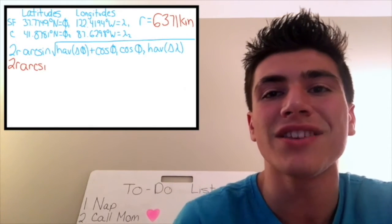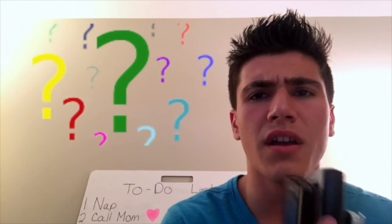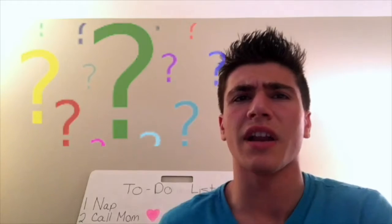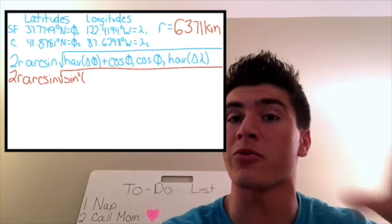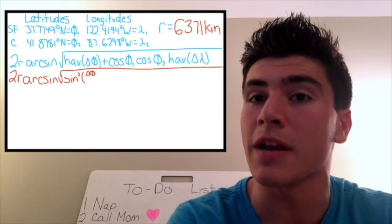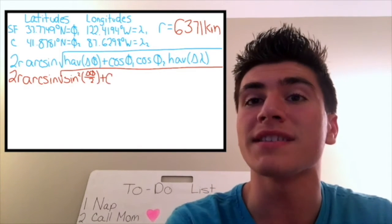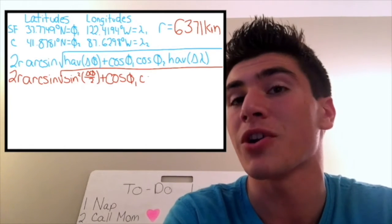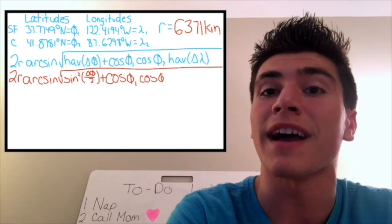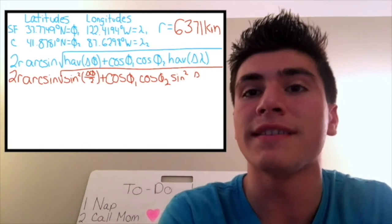times the angle whose sine is the square root of Haversine. But wait, none of my calculators have Haversine. So now, I need to simplify that to be sine squared of whatever was inside for the Haversine, divided by 2. So, in this case, Delta Phi, divided by 2, plus the cosine of the latitude of San Francisco, times the cosine of the latitude of Chicago, times, I'm going to simplify Haversine once more, sine squared of Delta Lambda,